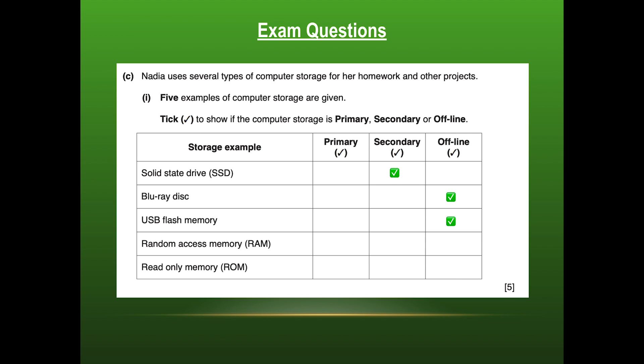Next is our random access memory or RAM. That's our main memory. All main memory is primary. So that is a primary memory device. And lastly, our read-only memory. Again, external to the computer and a part of main memory, which makes it our primary memory.